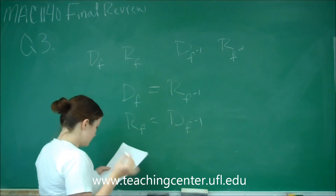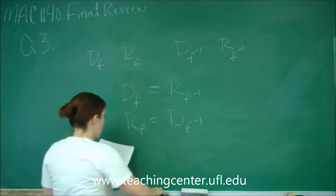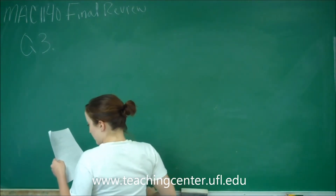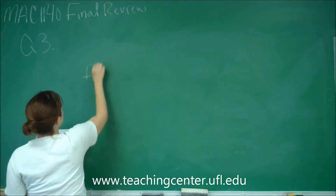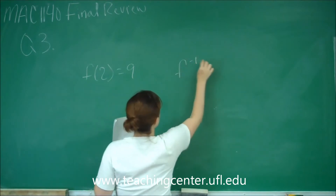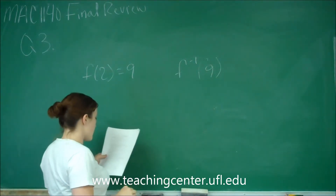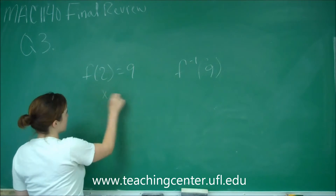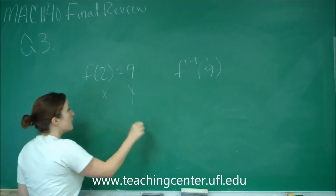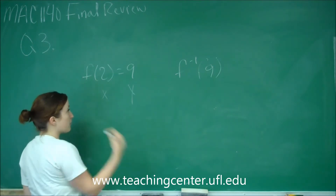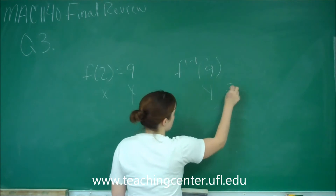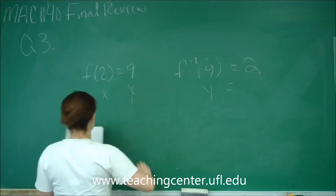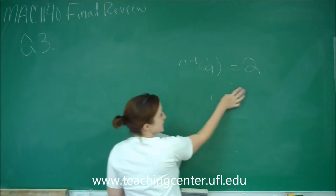The next question, part b, says that if f(2) = 9, what is the inverse of f of nine? That goes back to what we were just saying about domain and ranges and how they're related. This is my x value and this is my y value. But for the inverse, my x value becomes my y value and my y value becomes my x value. So this will be equivalent to two — we just switch those. So your answer is just two for this one.